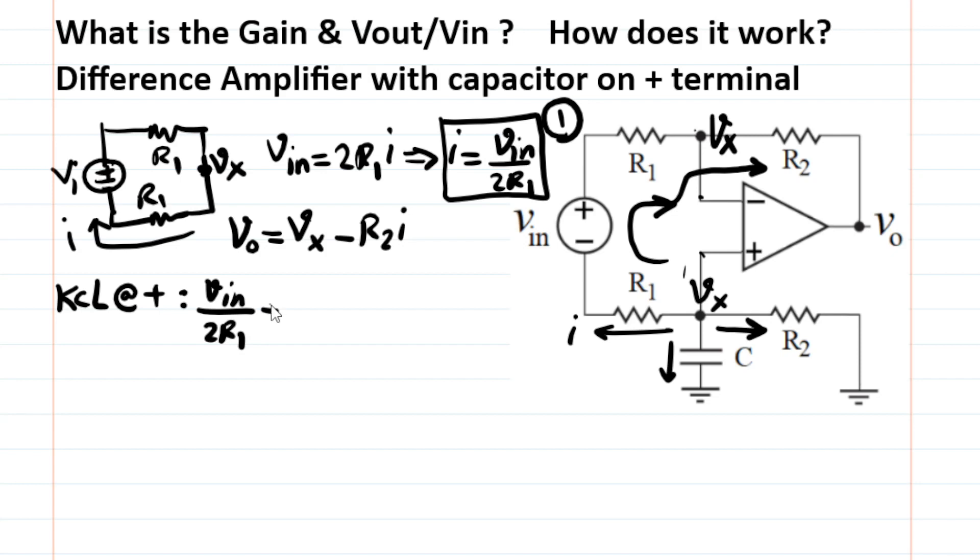you have the current I, which we found in equation 1. So I have Vin divided by 2R1. That's for current I plus the current through the cap, which is, of course, Vx. That's the voltage across the cap. Divide by impedance of the cap, which is 1 over Cs. And then the current through R2, which is Vx, the voltage across R2, divided by R2. And the sum of these three currents should be zero, according to KCL.